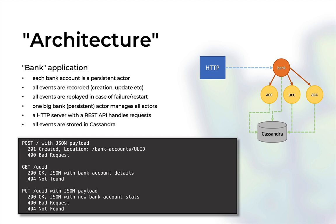In terms of the HTTP REST API, the application will have a POST at the root location to create a bank account, a GET at a UUID to retrieve the current details of a bank account, and an HTTP PUT for updates. You can find the relevant responses in the table below — I'll show you step by step what we need to do.